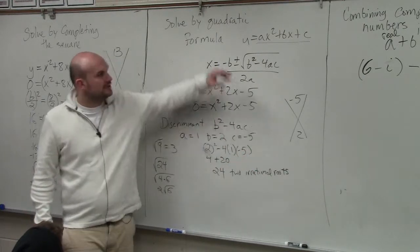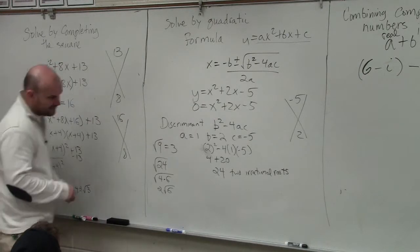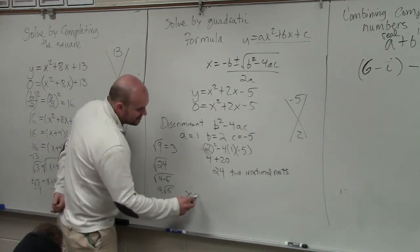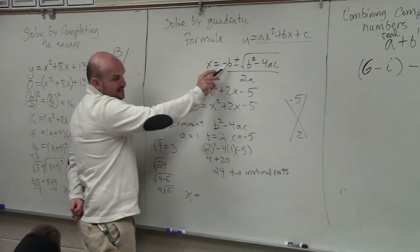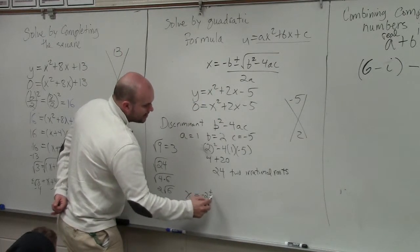We're not done, though. It's asking us to find the values for x, just like we found the values of x over here. So what we do is we take this rest of the problem, which is opposite of b. So my b in this case is 2, so I have negative 2, plus or minus.